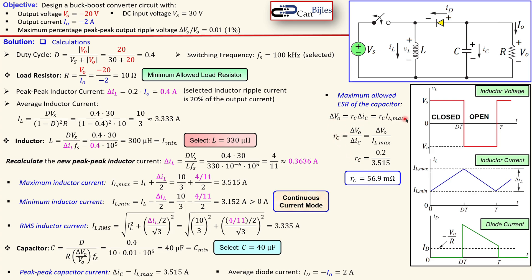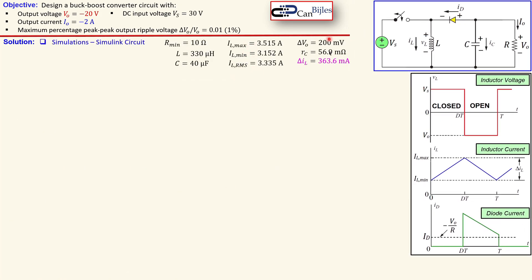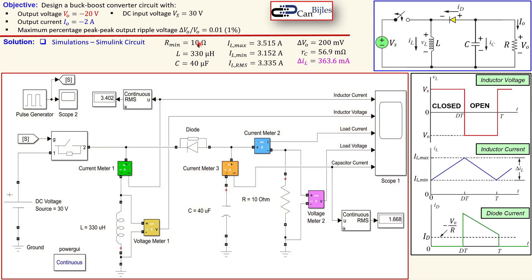Now we have calculated all values — let's look at the simulation. The summary shows: minimum load resistor of 10 ohms, capacitor of 40 microfarads, inductor of 330 microhenries, input voltage of 30 volts. The scope measures capacitor current, load current, load voltage, inductor voltage, and inductor current. The simulated RMS inductor current is approximately 3.4 amps, compared to our calculated 3.34 amps — close enough and within acceptable accuracy.